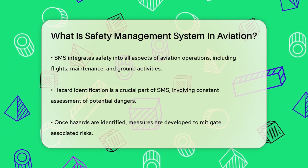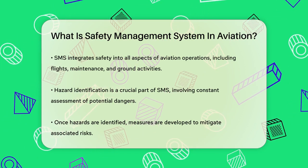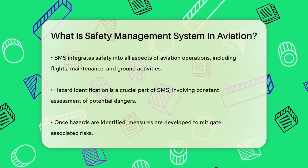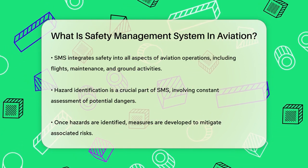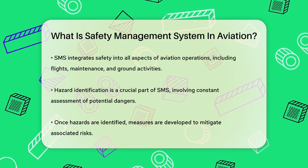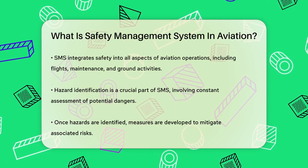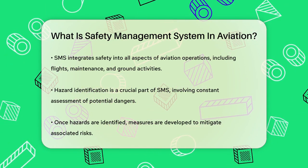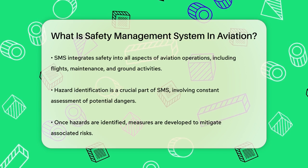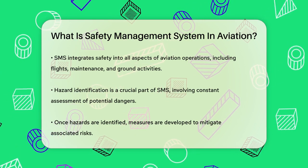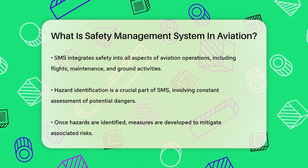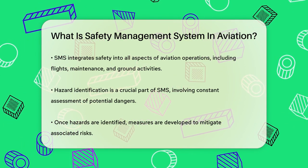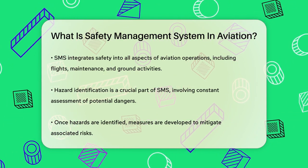SMS includes systematic procedures, practices, and policies to manage safety risks effectively. One of the key parts of SMS is hazard identification — constantly looking for potential dangers and assessing the risks associated with them. Once a hazard is identified, the next step is to develop and implement measures to mitigate that risk. This could be anything from changing a procedure to providing additional training to staff.